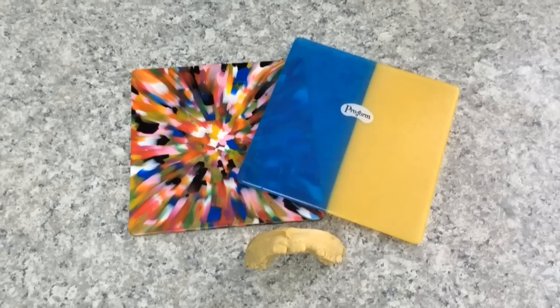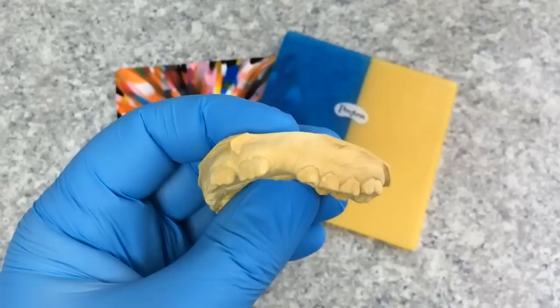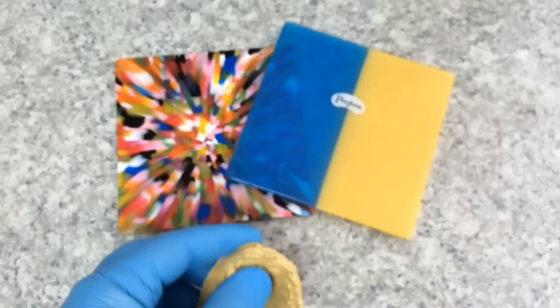So first of all, what we do is we take an impression of the mouth. From that impression, we end up with a stone model and this is basically a duplicate of the mouth. So we trim it up to be nice and thin and from here then we grab the mouth guard blank that we are going to be using.